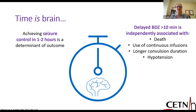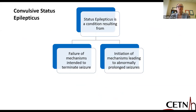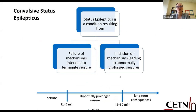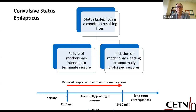Time really is brain and not just for TPA. When we look at the status epilepticus definitions, I'm coming back to these two major components: failure of mechanisms intended to terminate seizures, and initiation of mechanisms that lead to abnormally prolonged seizures. In convulsive status epilepticus, our timeline is T1 at five minutes and T2 at 30 minutes. As we progress from T1 to T2, we get a reduced response to anti-seizure medications and subsequent long-term consequences.